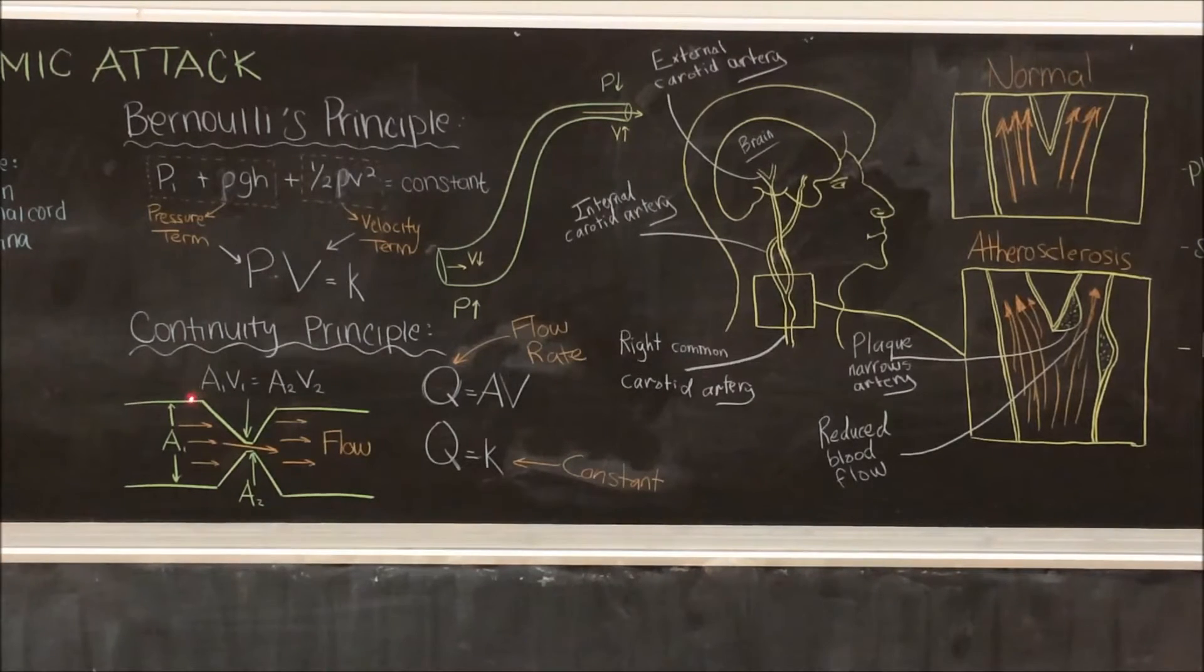The Bernoulli principle. In essence, both velocity and pressure of a fluid account for the energy present. Bernoulli principle can be simplified from pressure plus rho GH plus one half rho times velocity squared equaling some constant to a pressure term and a velocity term.